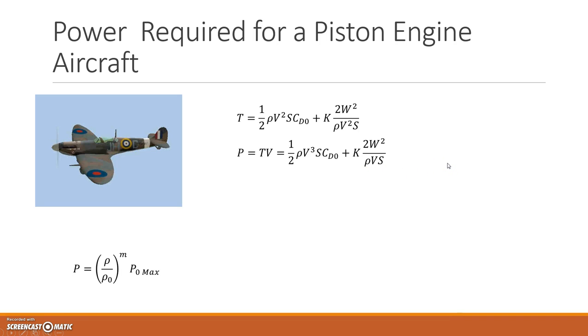I want to get the velocity at which power is a minimum, so I'm going to differentiate this equation with respect to V and set it equal to zero at the minimum point.